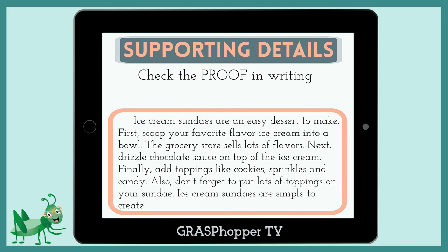Here is a new paragraph. First, we will read it. Ice cream sundaes are an easy dessert to make. First, scoop your favorite flavor ice cream into a bowl. The grocery store sells lots of flavors. Next, drizzle chocolate sauce on top of the ice cream. Finally, add toppings like cookies, sprinkles, and candy. Also, don't forget to put lots of toppings on your sundae. Ice cream sundaes are simple to create. The topic sentence is: ice cream sundaes are an easy dessert to make. And here are some sentences that might be the supporting details.